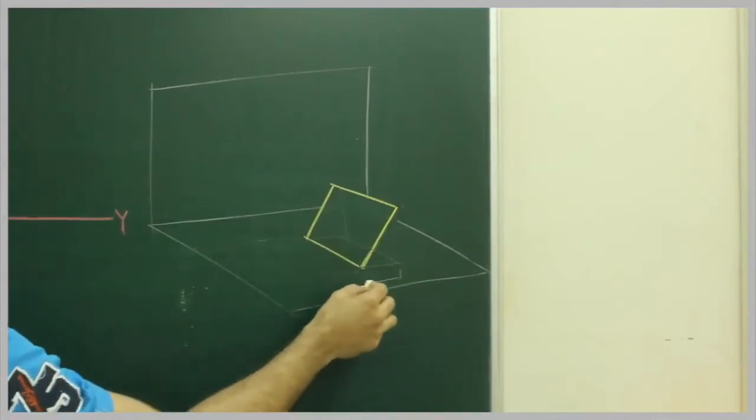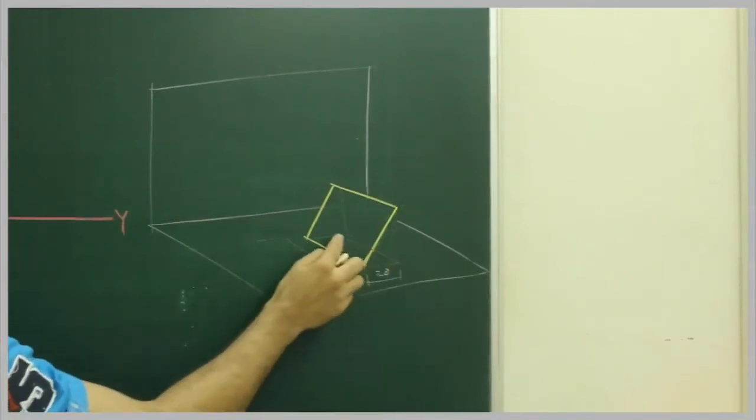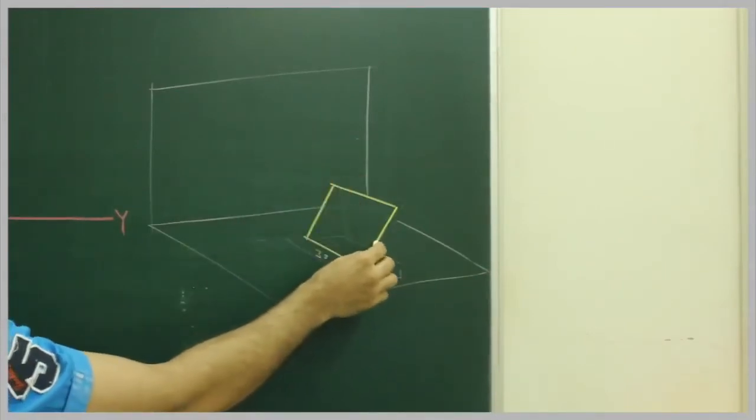A rectangle with side 20. See, this is already 30 and this is 20. You can see from the top, so we need to find out this angle.